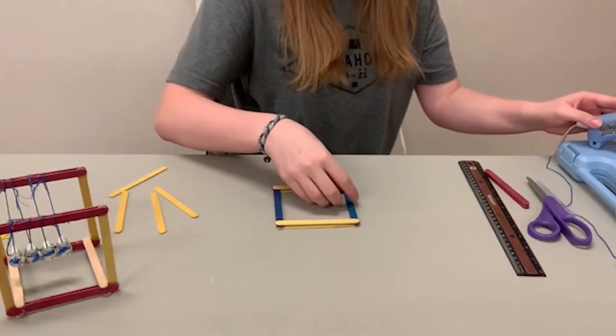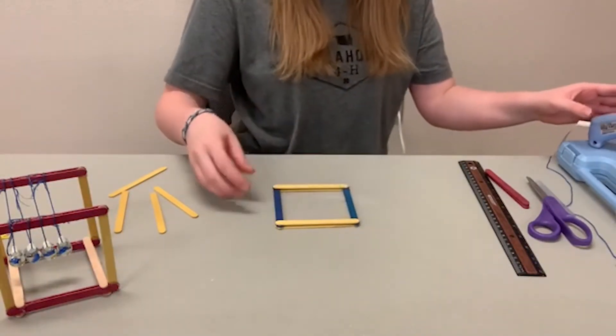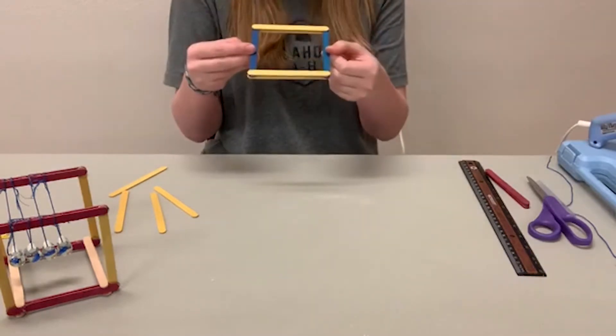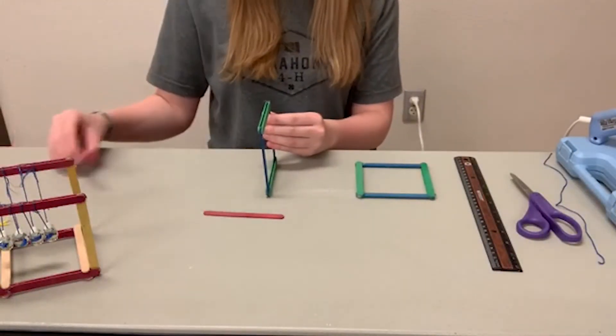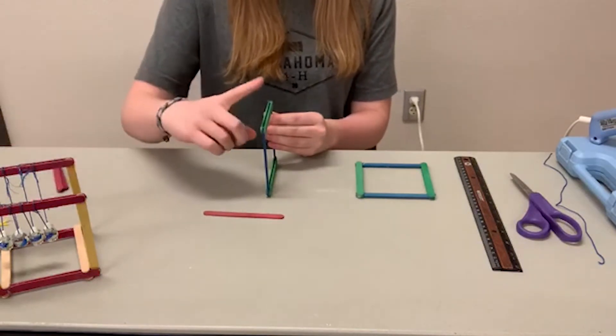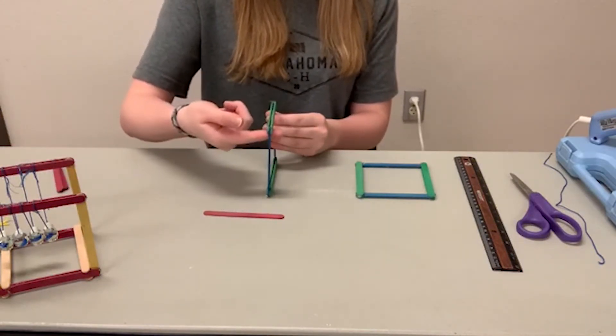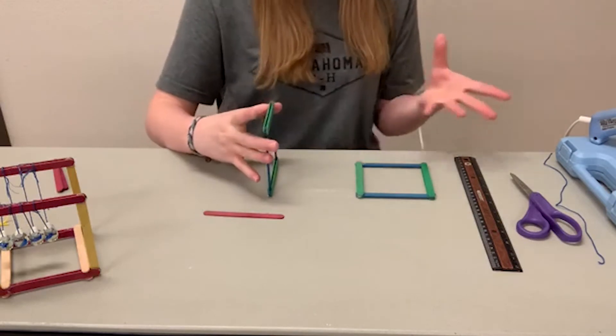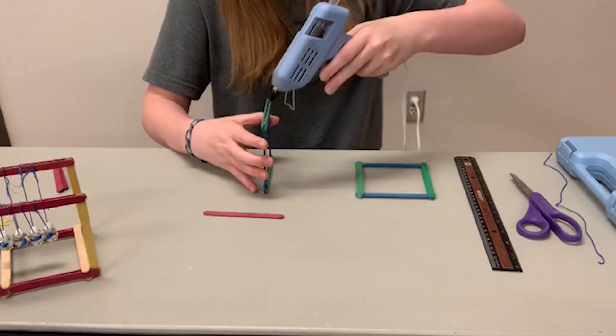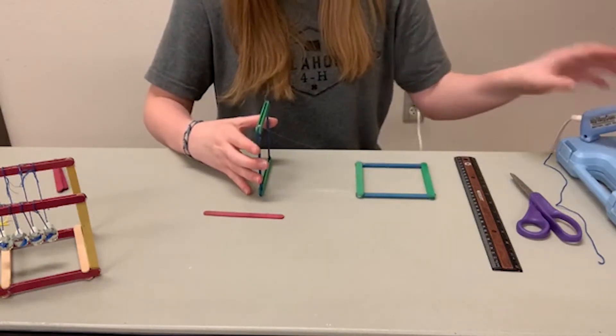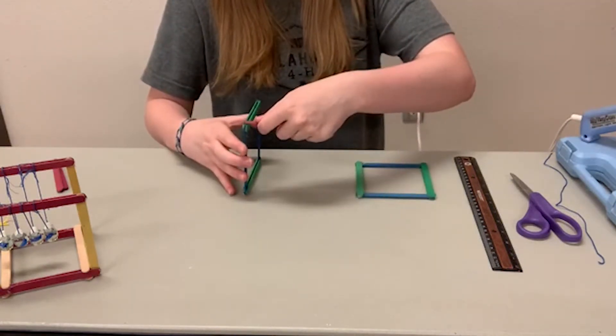Once you have done this you're going to repeat these steps to make another one that looks identical to this. So you're going to use four popsicle sticks and put two on top and two on bottom using hot glue again. Put one on the corner on one side and press that down.